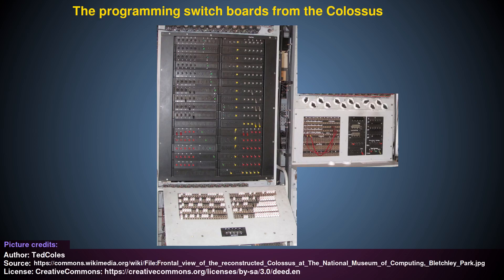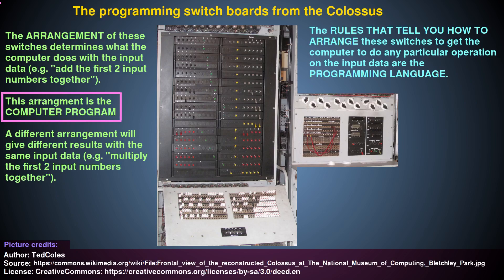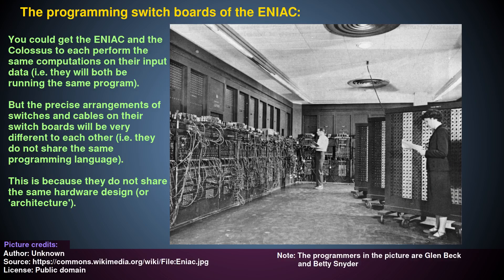Early electronic digital computers were programmed laboriously, for example by rearranging physical switches and plug-in cables on a switchboard. The resulting arrangement of connections determined what computations the computer would do in response to input data. This arrangement of connections was the program, and the rules for how to arrange those connections to achieve the desired computations, i.e. the programming language, was unique to each physical type of computer.